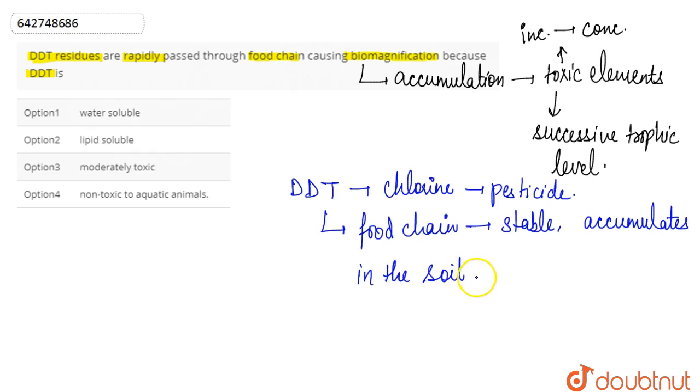As DDT is a fat soluble substance, DDT takes many years to break down and it enters into the body of other organisms.